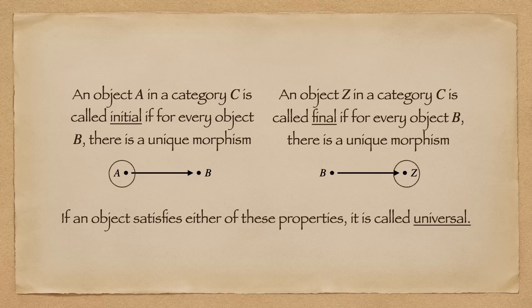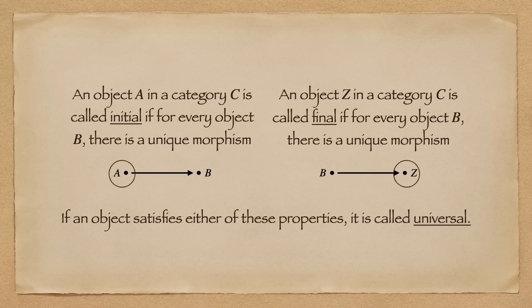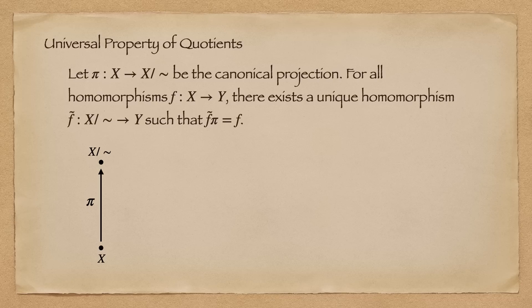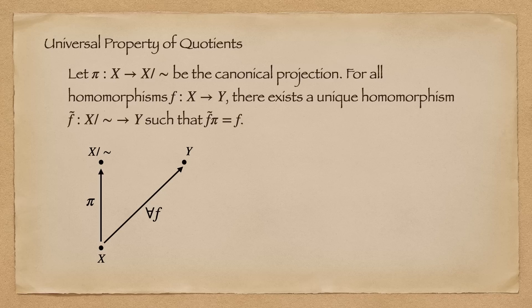For now, we'll focus on the initial objects. Now let's observe the statement of the universal property of quotients. It says that, let pi be our canonical projection, mapping x into its cosets under a given equivalence relation. Then for all homomorphism f from x to y, there exists a unique homomorphism f tilde from the quotient set to y, such that the diagram commutes.